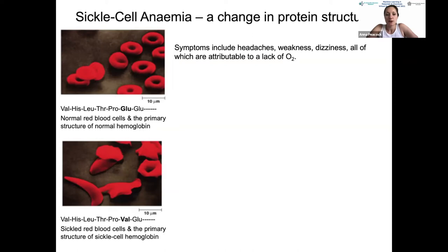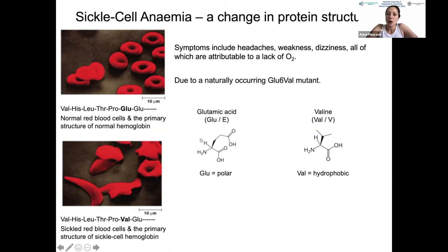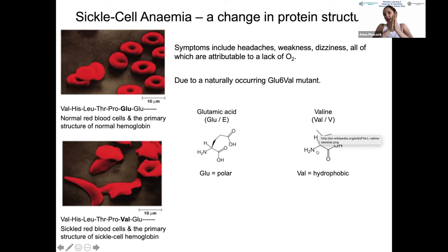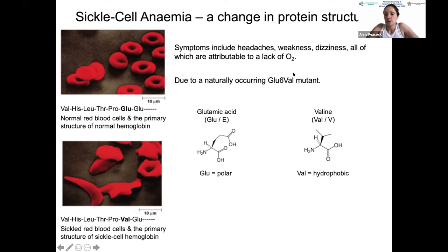Problems with protein folding or structure lead to disease. Sickle cell anemia results from a single amino acid change in hemoglobin: glutamic acid at position 6 is mutated to valine. A polar residue is replaced by a hydrophobic one—whereas the glutamic acid is happy on the protein surface, valine wants to bury in a hydrophobic environment. Multiple protein units aggregate to bury this valine at their interfaces, forming fibers rather than soluble protein, which impairs oxygen binding and causes oxygen-deficiency symptoms.